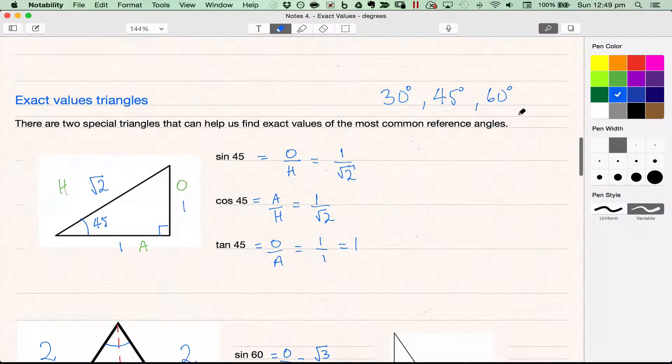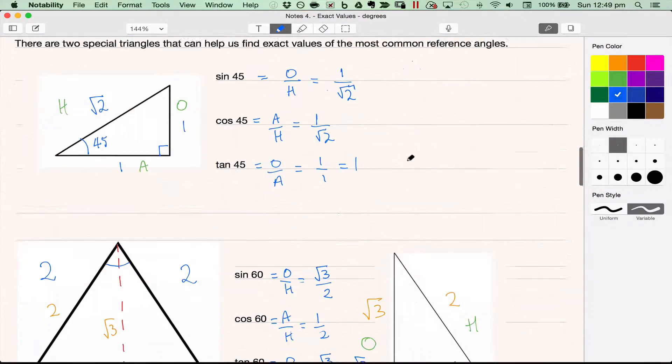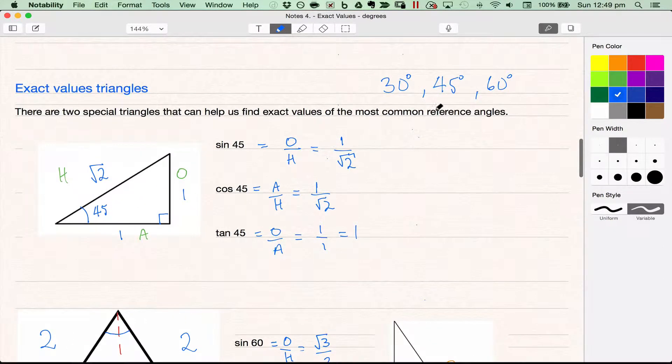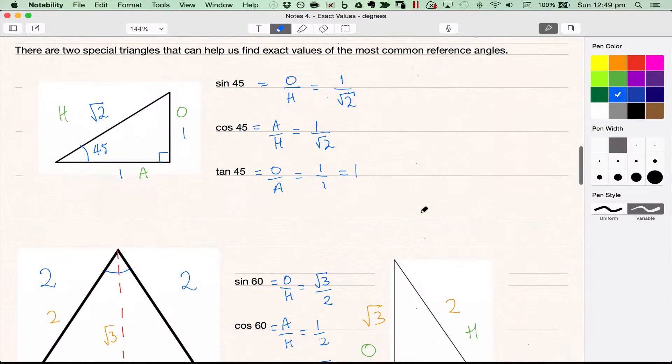Going back up here to the three that we needed to memorize, we needed to have the 45 degrees which we've done here, the 60 degrees which we've done here, and the last one we need to look at is 30 degrees.